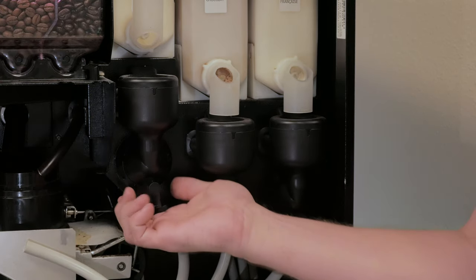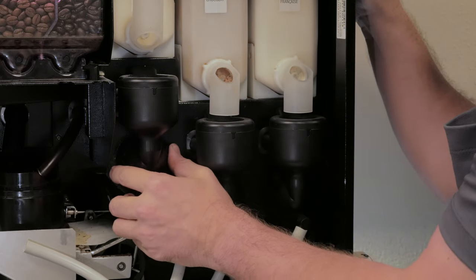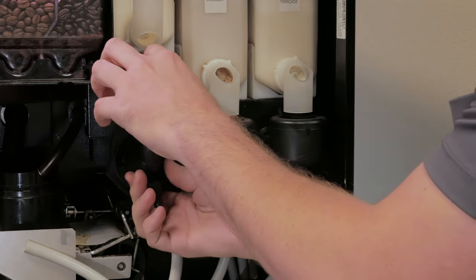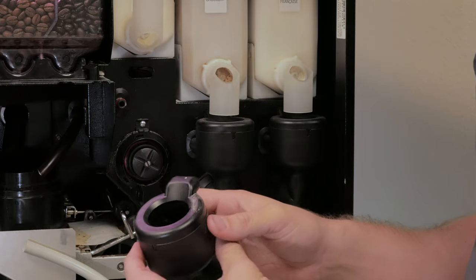The next step is to rotate the locking mechanism counterclockwise to unlock the mixing bowl from the machine. Pull the mixing bowl out, clean it fully, and make sure it is fully dry.